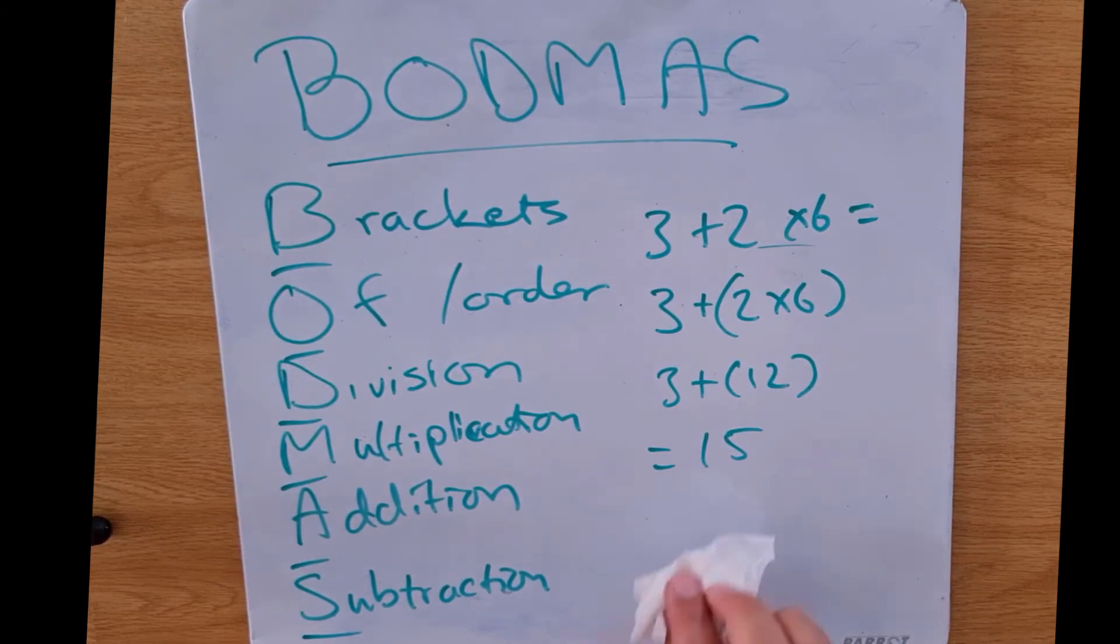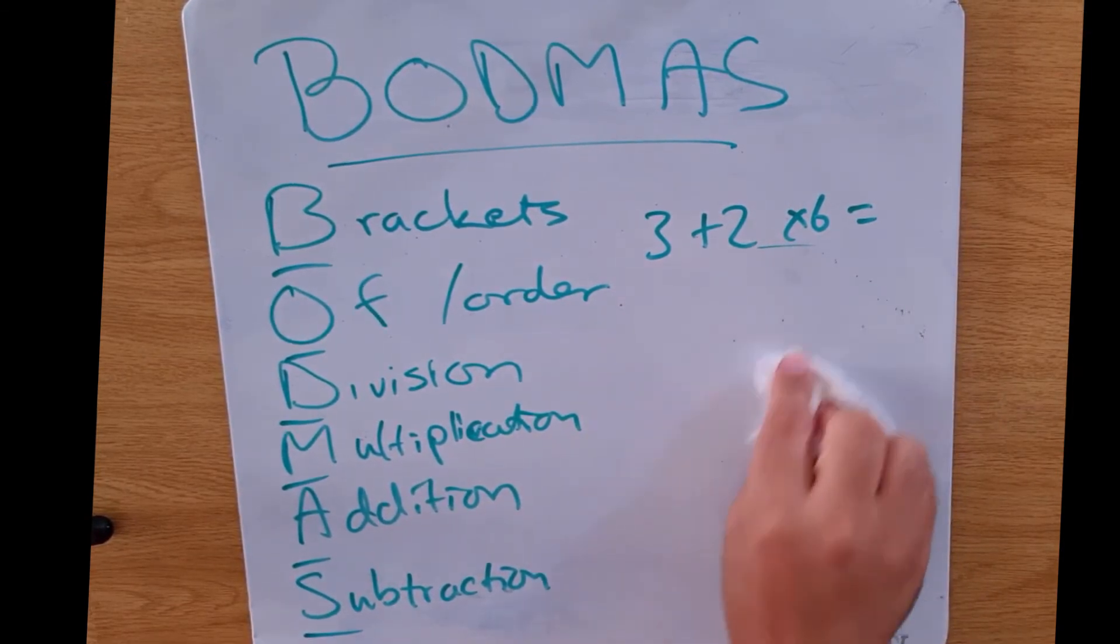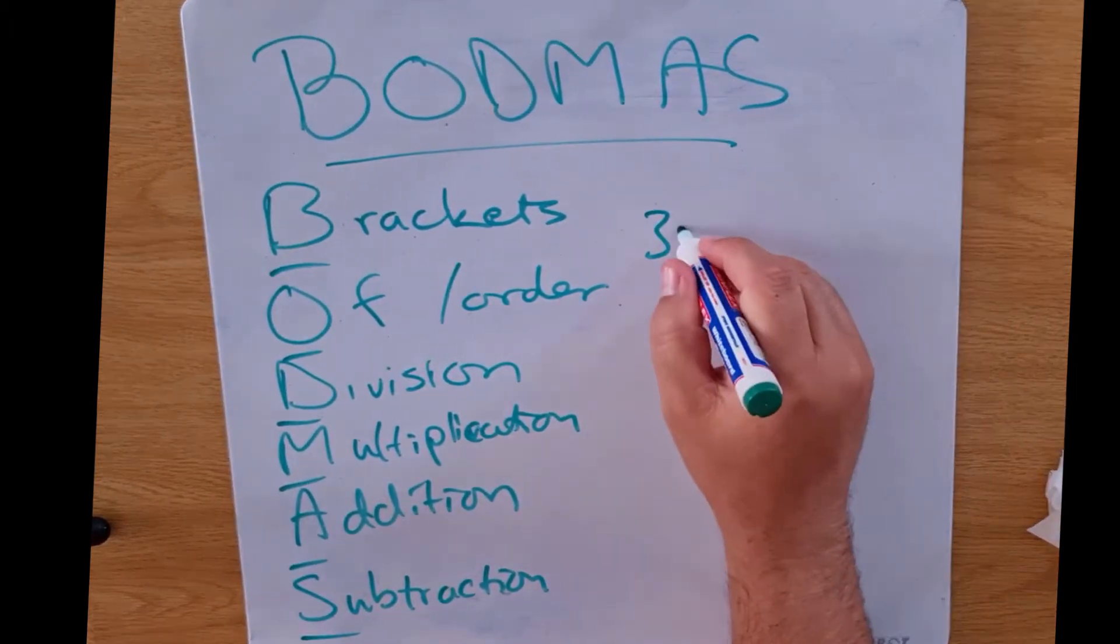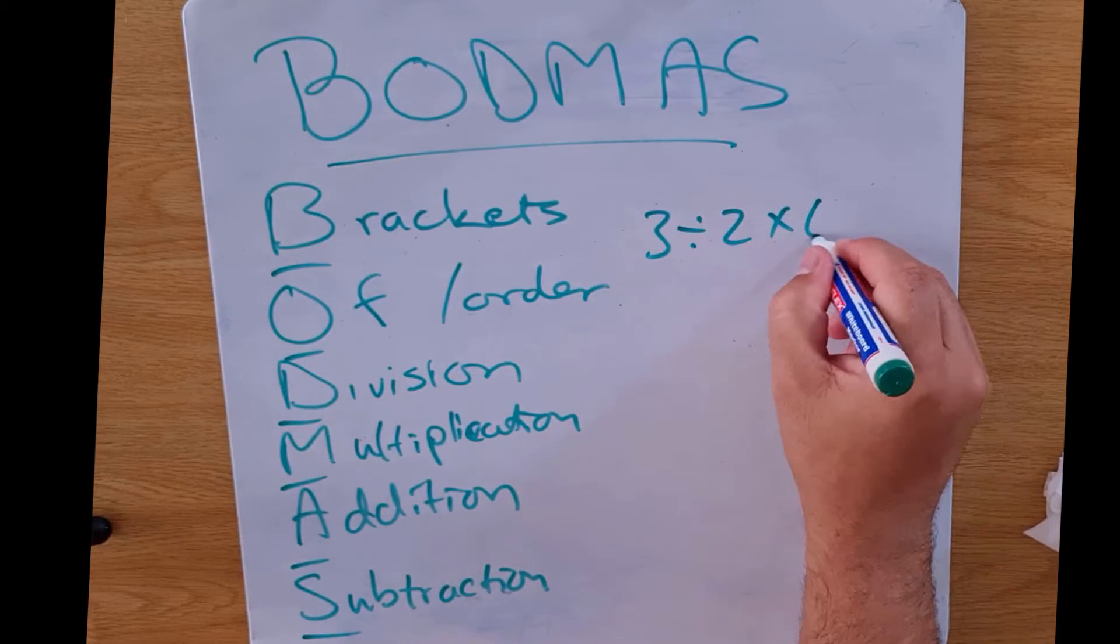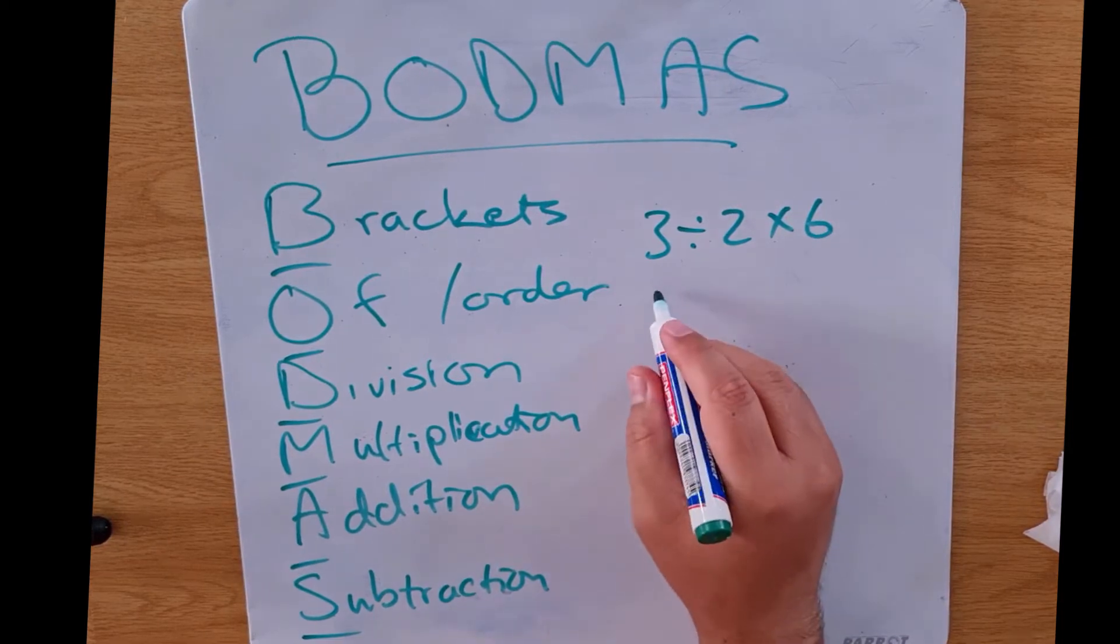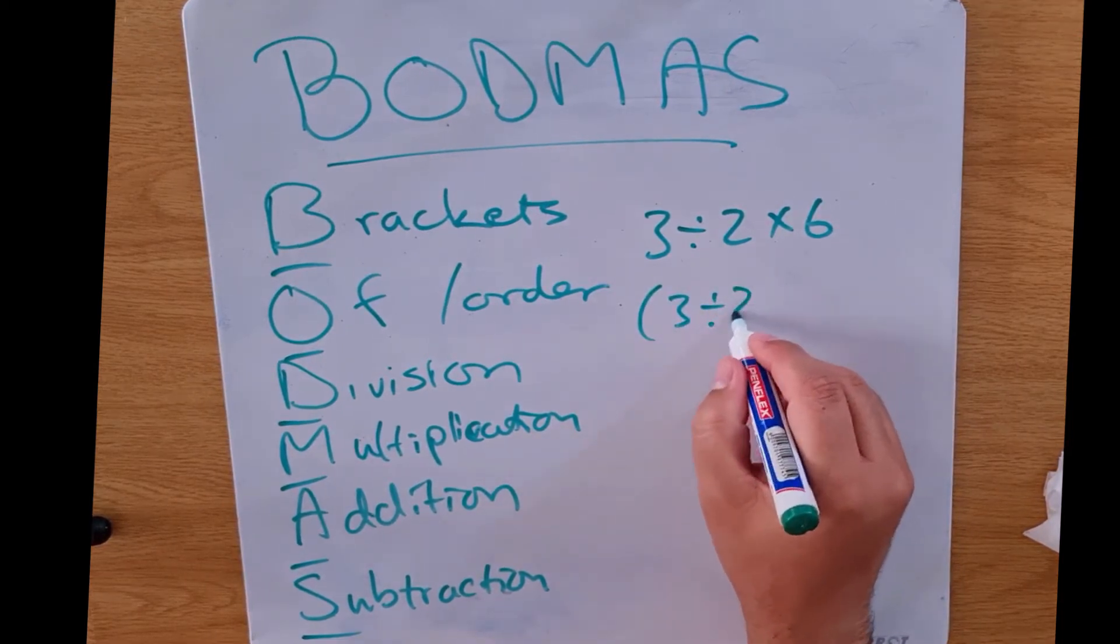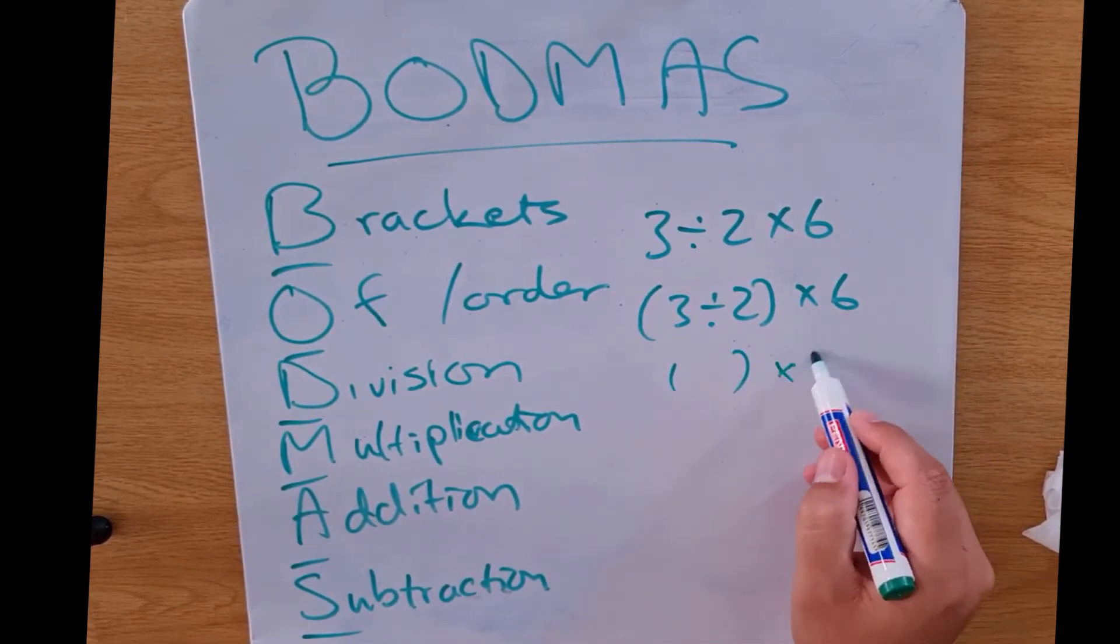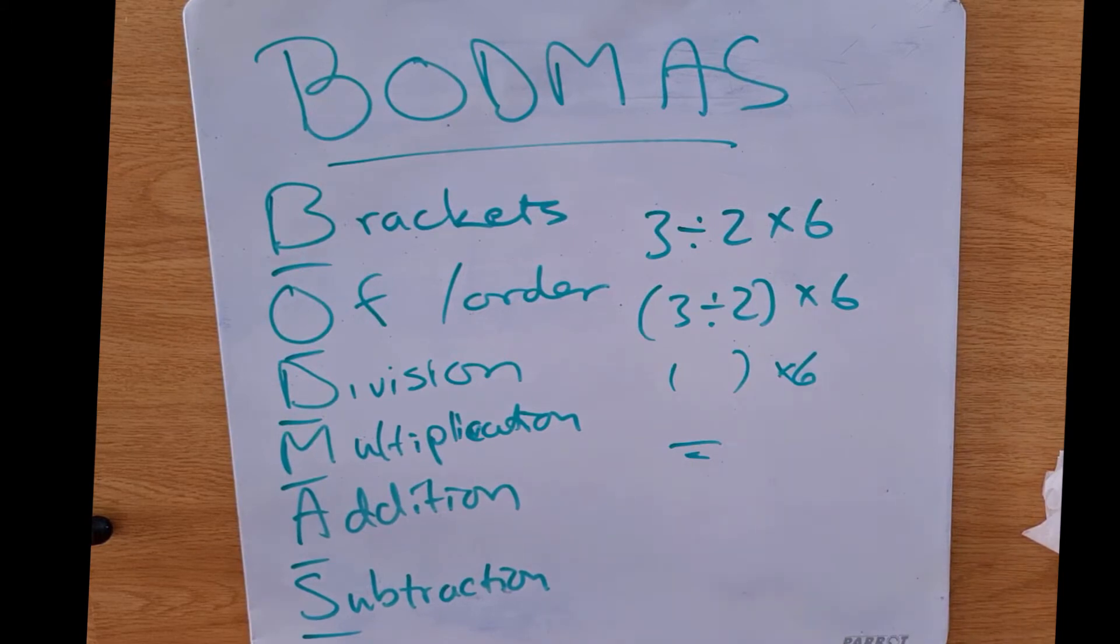Now what if we have the exact same thing but this time we say 3 divided by 2 multiplied by 6. If we look at BODMAS, what is it saying to us? Division comes first, so now it'll be 3 divided by 2 multiplied by 6, and then whatever that answer is we will multiply it by 6.